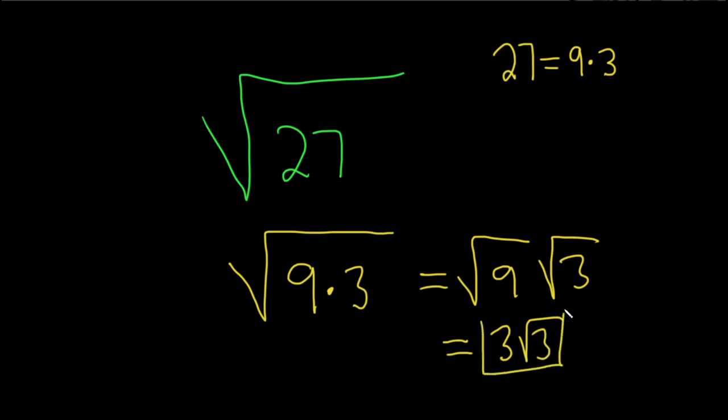And that would be the final answer. So again, you see something like this, just think, okay, what factors of 27 do we have? And which of those factors can we take the square root of and get a whole number?